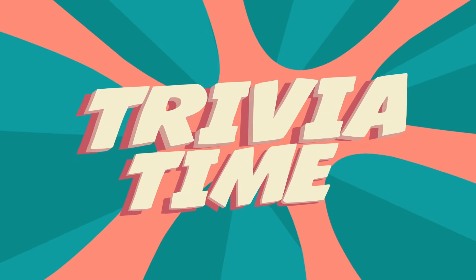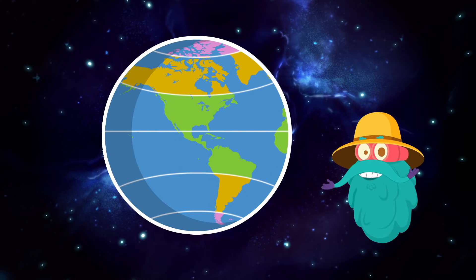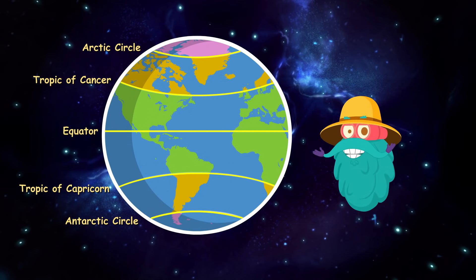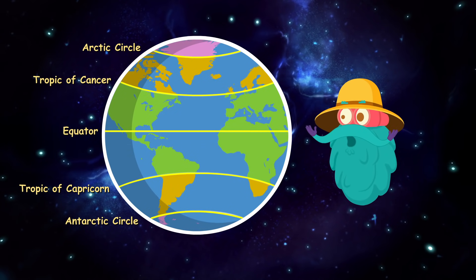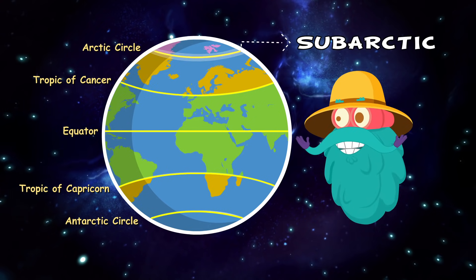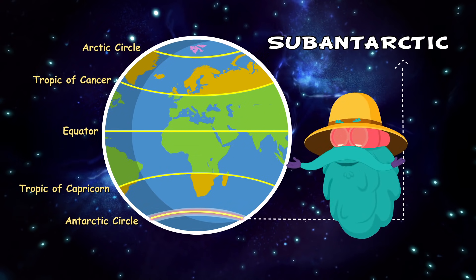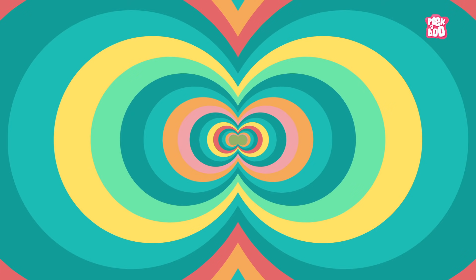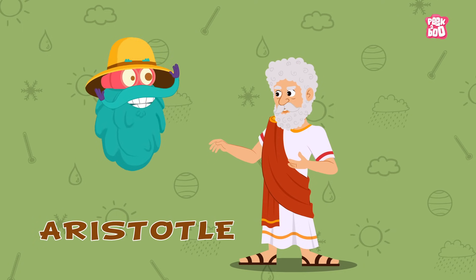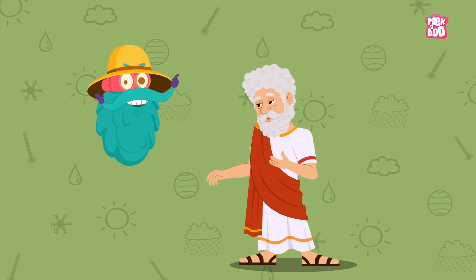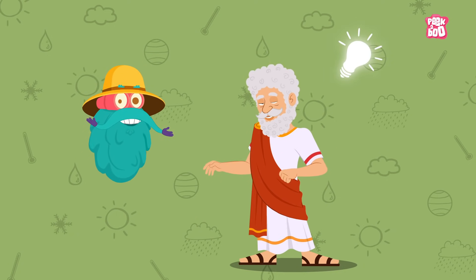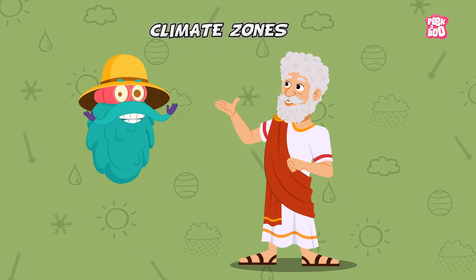Trivia time! The edges of the temperate zones are also sometimes referred to as the Subtropics, Subarctic and Subantarctic. Aristotle, the ancient Greek scholar, was the first one to come up with the idea of climate zones.